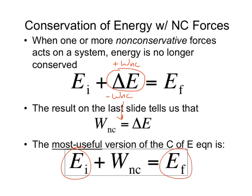Just one little note: I always put a plus sign out front, and then if the non-conservative work is negative I put minus in parentheses. That way I don't double up my negatives — plus negative means you wind up subtracting.